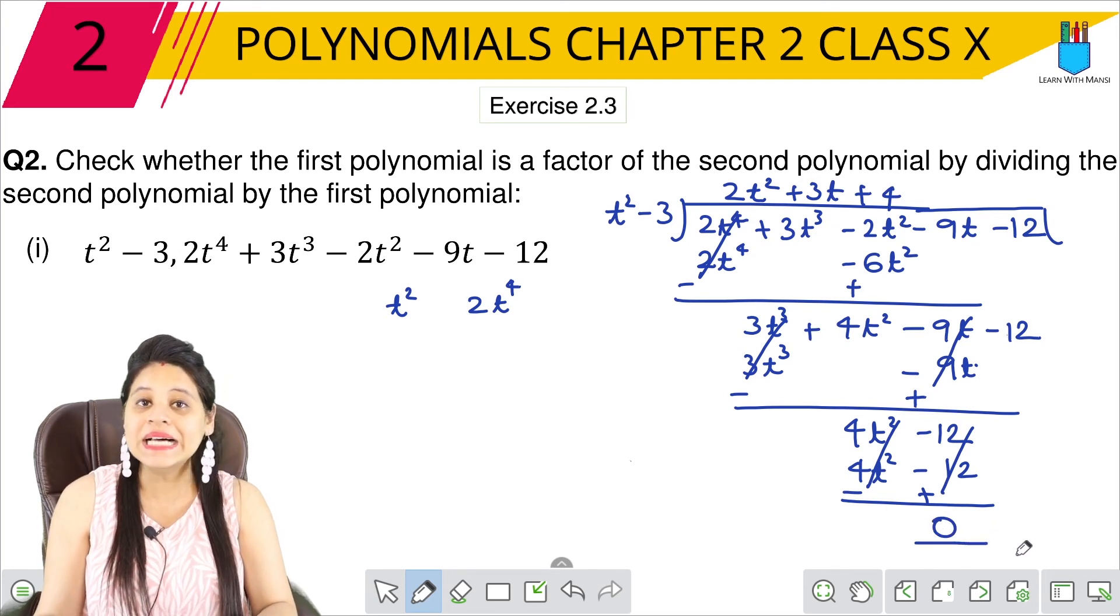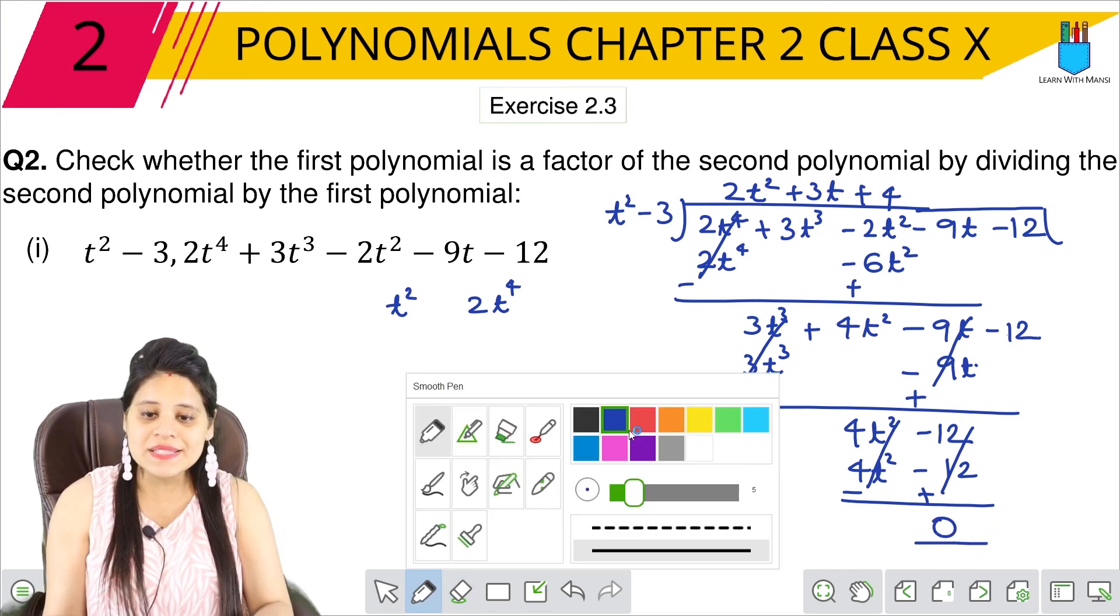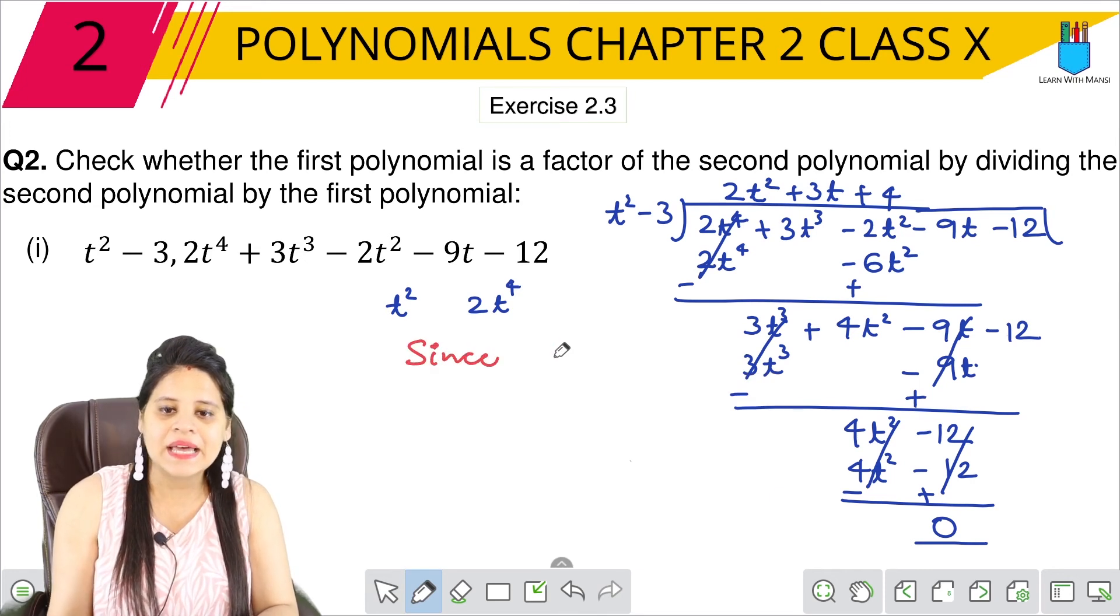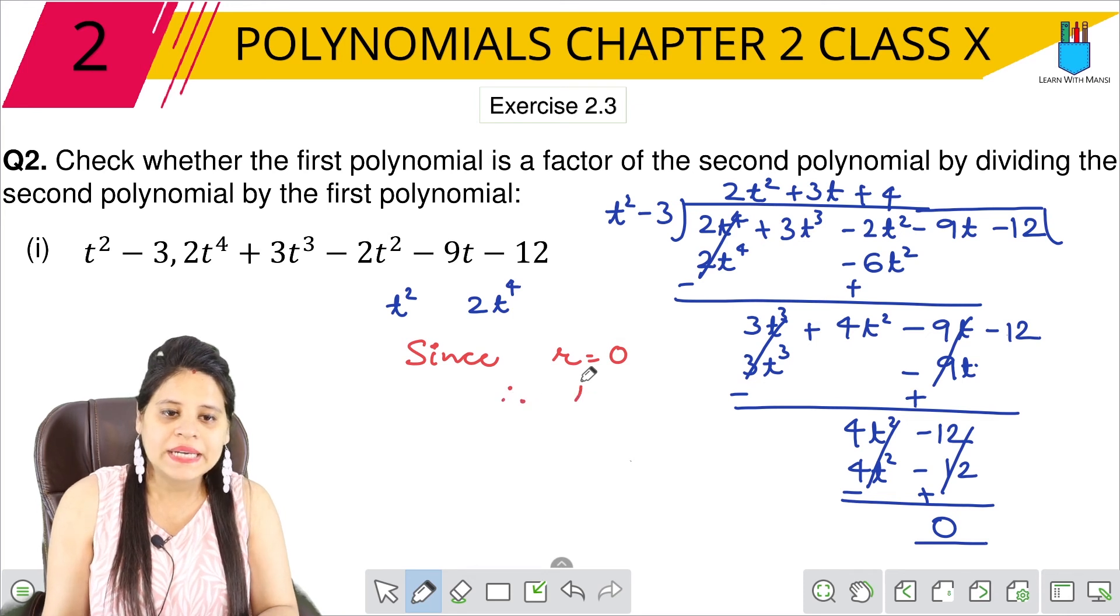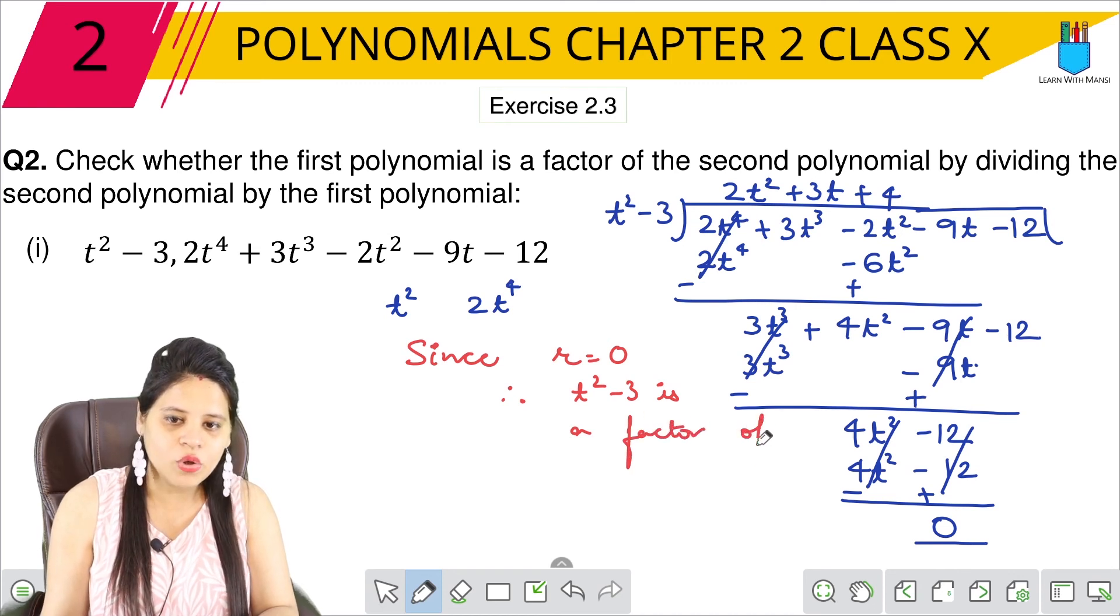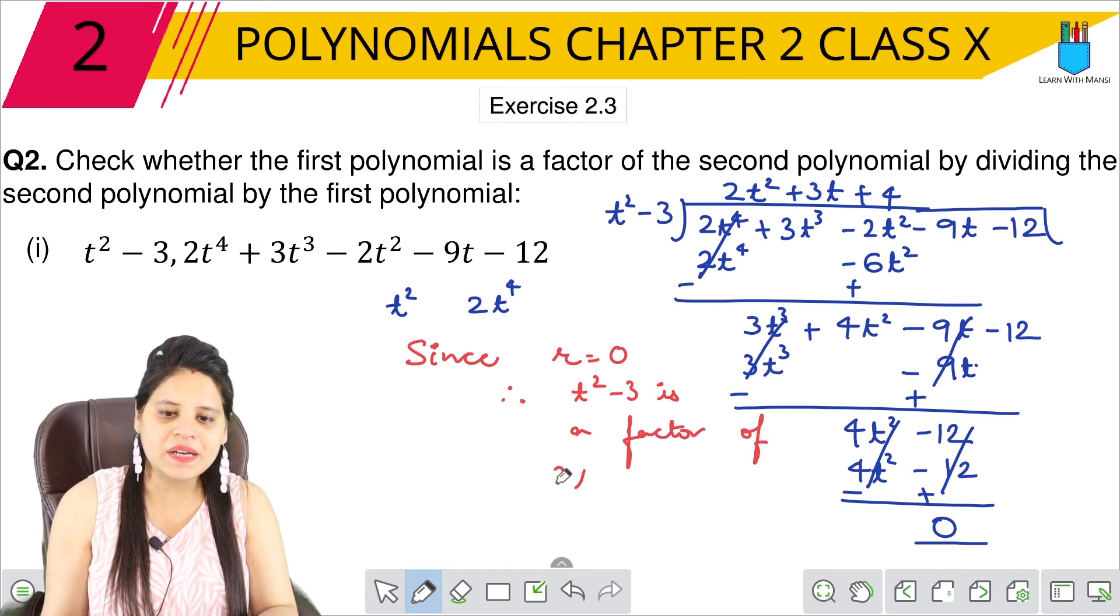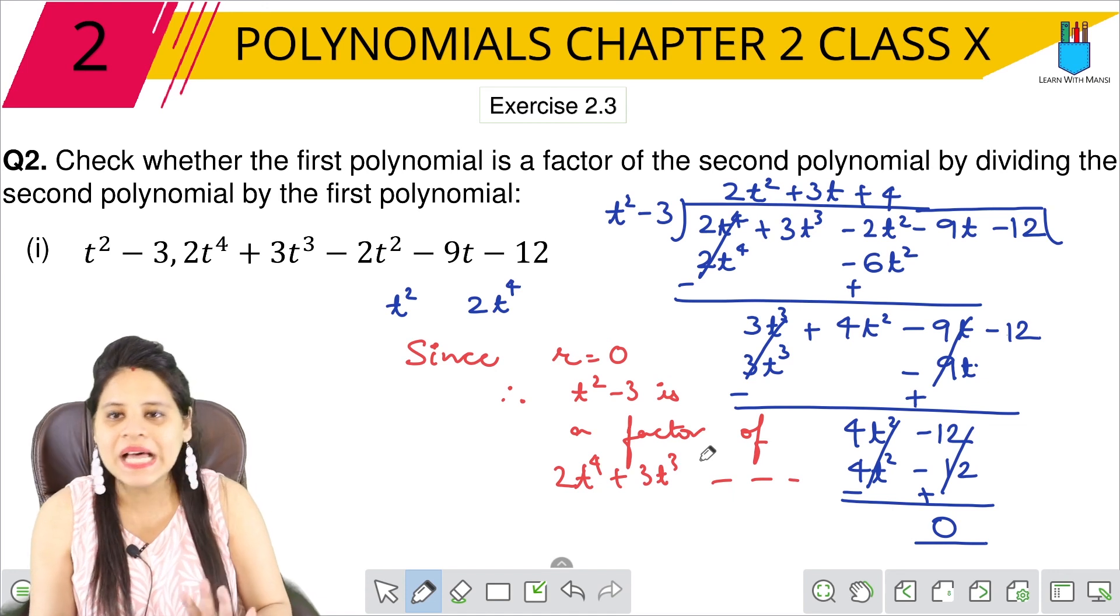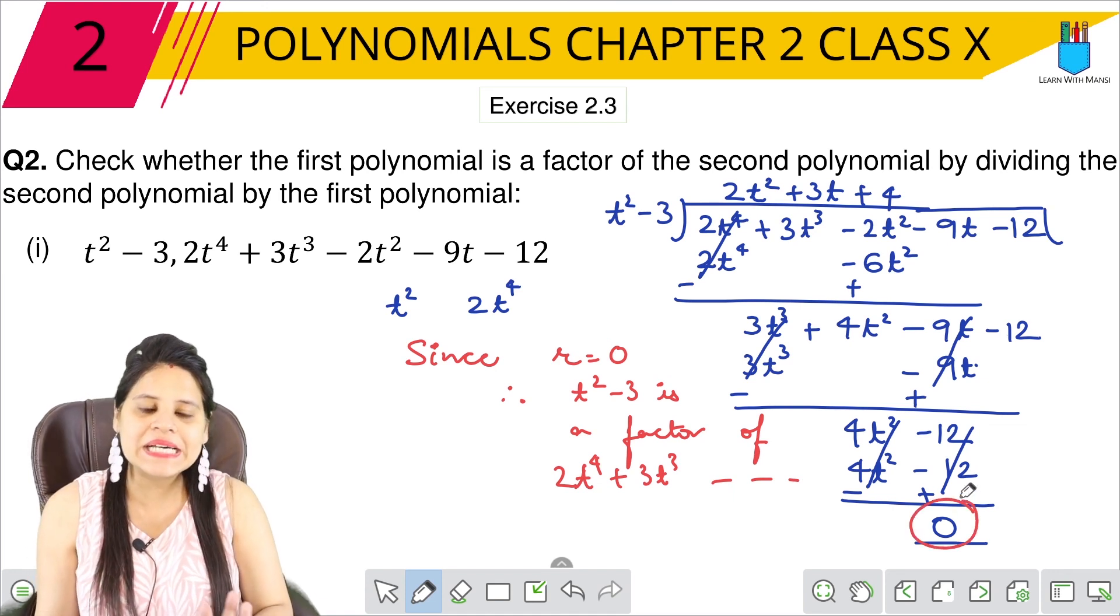Now since we can write, since remainder equals to zero, therefore t² - 3 is a factor of 2t⁴ + 3t³ and so on. So this is a factor because we have remainder zero.